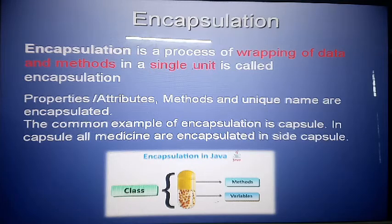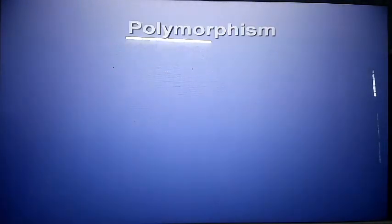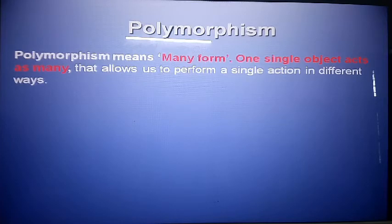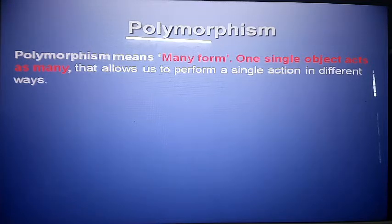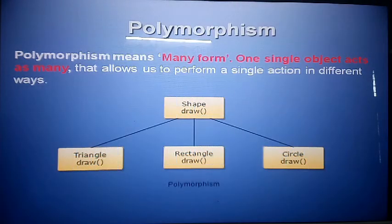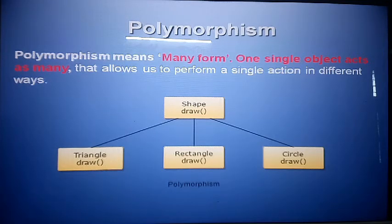Polymorphism is also most important. What is the meaning of polymorphism? Poly means many forms — a single object acts as many. It means a single object can perform many types of work, allowing you to perform a single action in different ways. For example, drawing shapes: triangle, rectangle, circle — these are polymorphic. One single function performs many types of work — that is polymorphism.